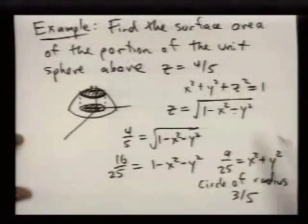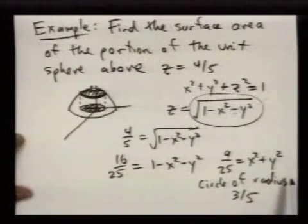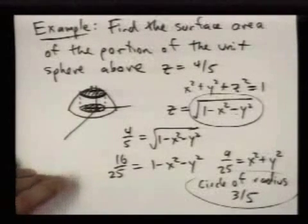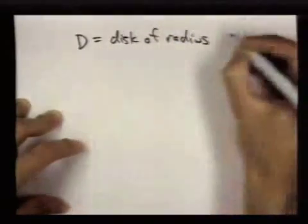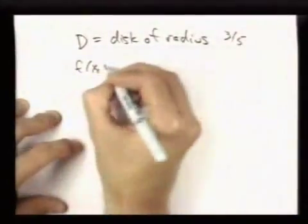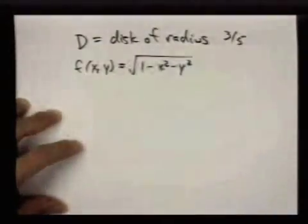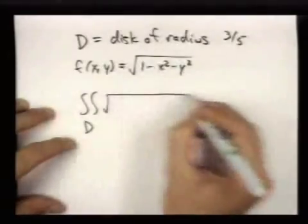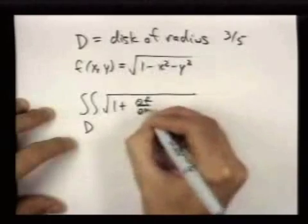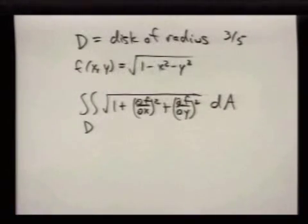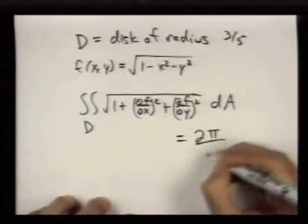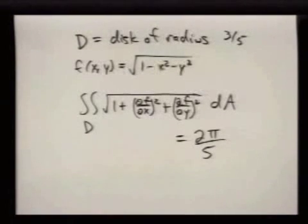So now the problem is we're finding the surface area of the graph of this function over the circle of radius 3 fifths. So I don't have time to go through the whole computation, but the thing you'll be computing is, well, let me call d the disk of radius 3 fifths. And here our function is this, and then the thing we're computing is going to be the square root of 1 plus df dx squared plus df dy squared dA. And if you want to try this yourself, you should come out with 2 pi over 5 in the end, and I'll stop there.